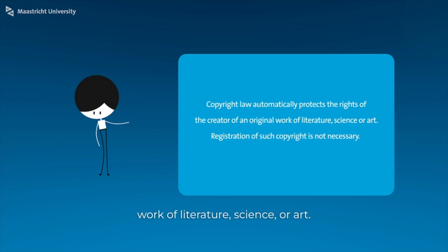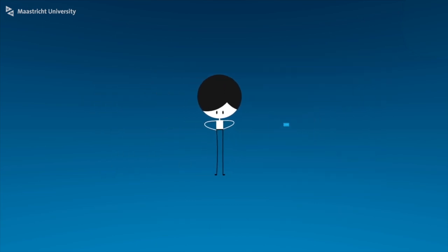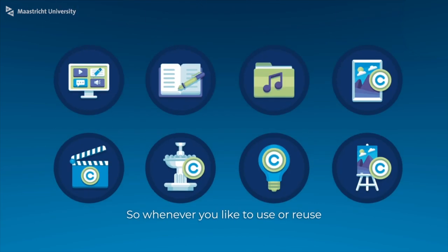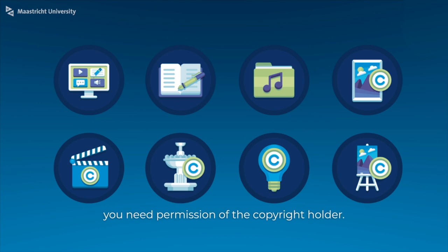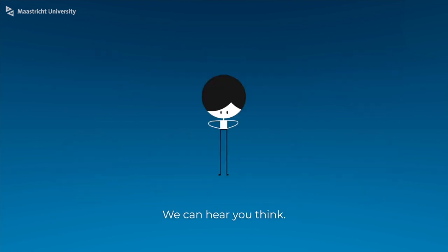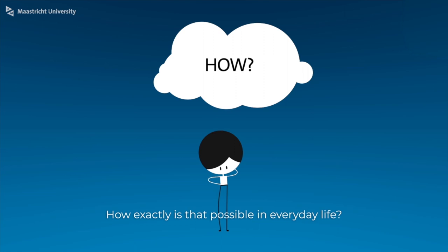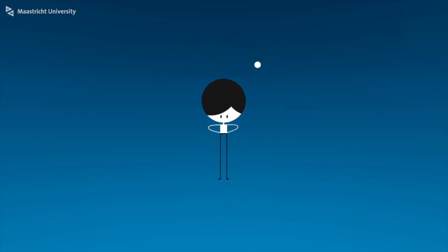an original work of literature, science, or art. Registration of such copyright is not necessary. So whenever you like to use or reuse parts of a journal article, book chapter, or that image you found on the internet, you need permission of the copyright holder. Here is how you can make things easier in everyday life.